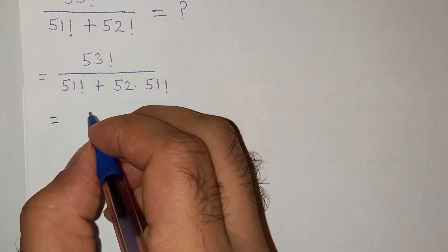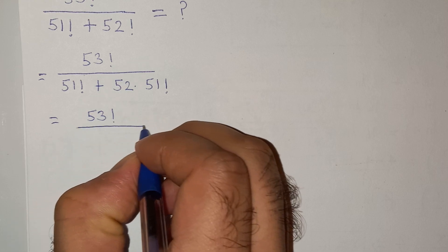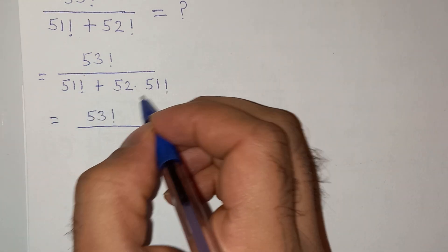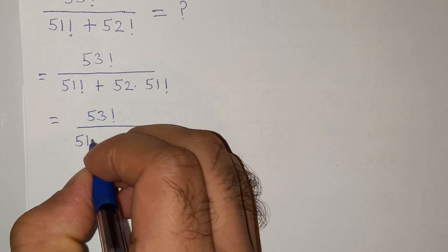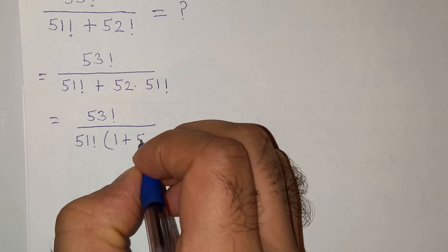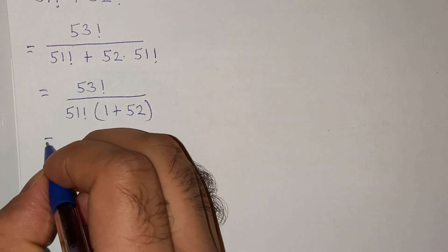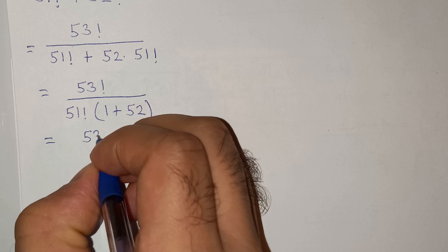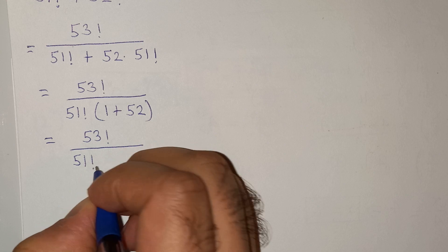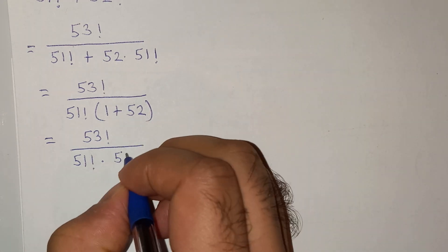So this will be equal to 53 factorial divided by, now in the denominator 51 factorial is common, so we can take it out: 51 factorial times 1 plus 52.